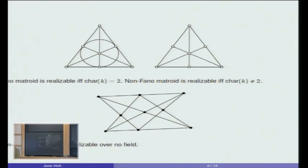If you delete this dependency relation, the curved one, then you again get a matroid on seven elements of rank three, but the new matroid called non-Fano matroid is realizable over field k exactly when your field has characteristic not equal to two.